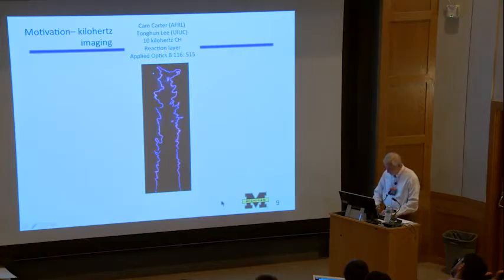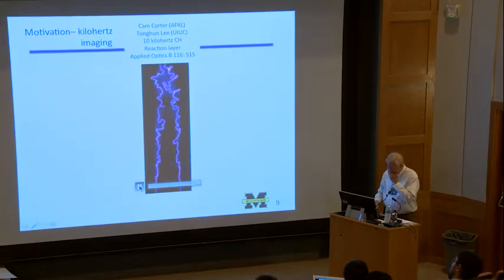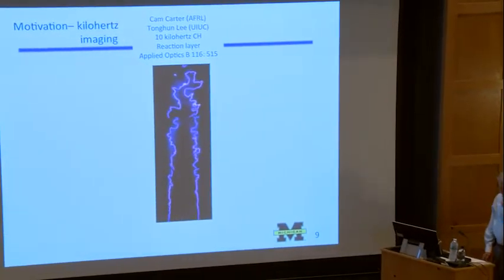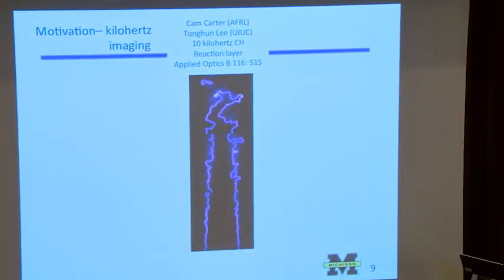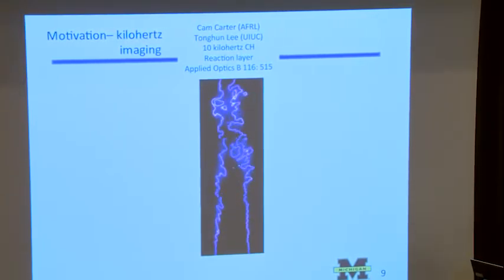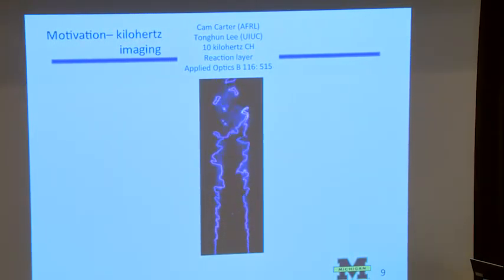Now, even though we have a lot of research problems that we haven't solved, we have a lot of new tools. So it's a really exciting area to be in. This is an experimental result of Cam Carter and Tong Hun Lee, who took movies of a turbulent flame. It's not very turbulent. And you see that it's kind of chopped up. It's actually four images stacked on top of each other. But with these kilohertz lasers, you can get very nice movies. And this is the reaction zone.